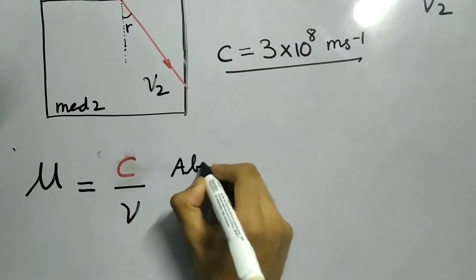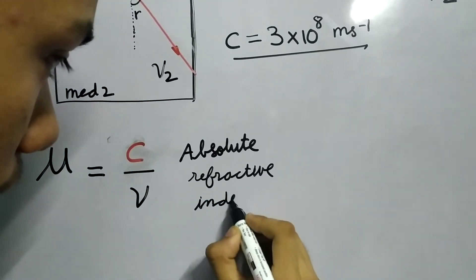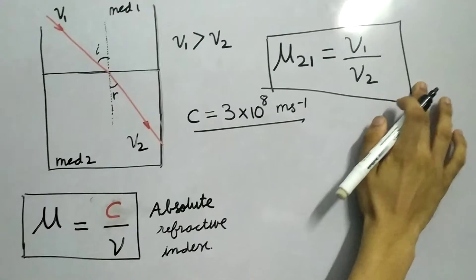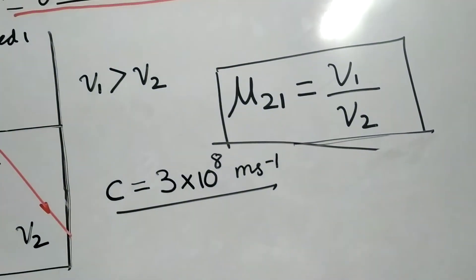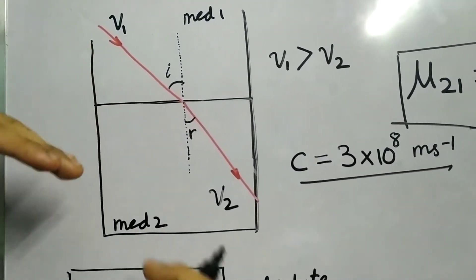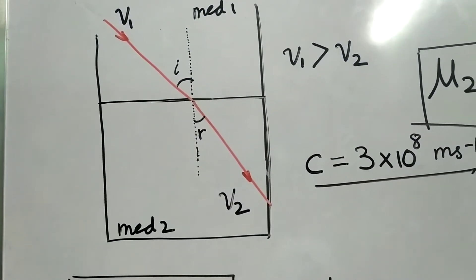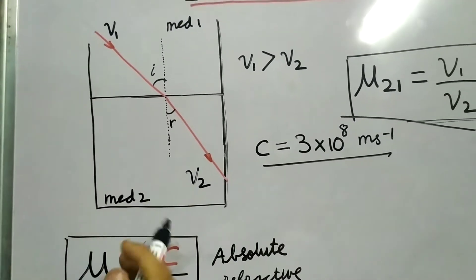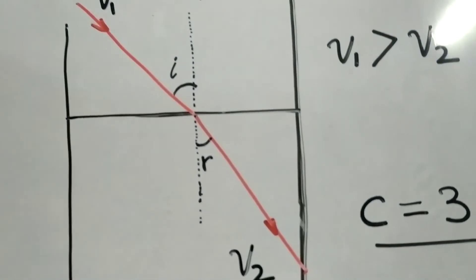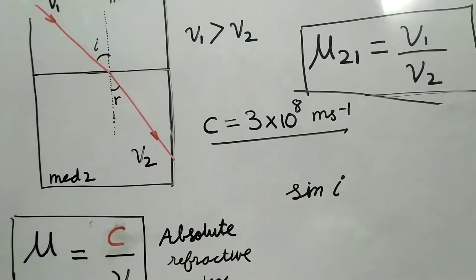Now we define something known as absolute refractive index. If we make medium 1 as vacuum, light travels generally fastest in vacuum. The velocity of light in vacuum is very special, it has a special symbol to it. We denote it by c, and its value is approximately 3×10^8 meters per second. Very very fast.